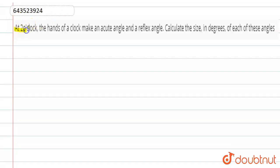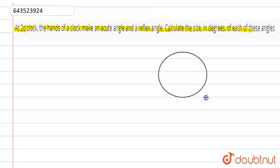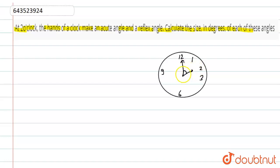In this question, at 2 o'clock, the end of a clock makes an acute angle and a reflex angle. Calculate the size in degrees of each of the following angles. We understand by making a clock — this is the clock with 12, 3, 6, and 9. This is 1 and this is 2. This is the hour hand and this is the minute hand at 2 o'clock. Now we find the angle between the minute hand and hour hand. This is the reflex angle.